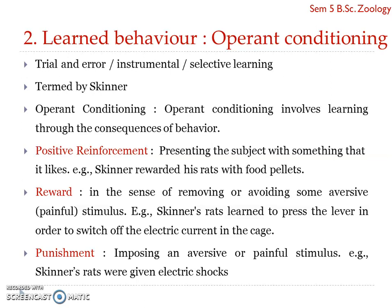In trial and error learning, an animal learns to eliminate a behavior that produces no reward or produces a negative effect — which we refer to as punishment. Through this same process, the animal also learns to repeat a behavior which produces a positive effect.